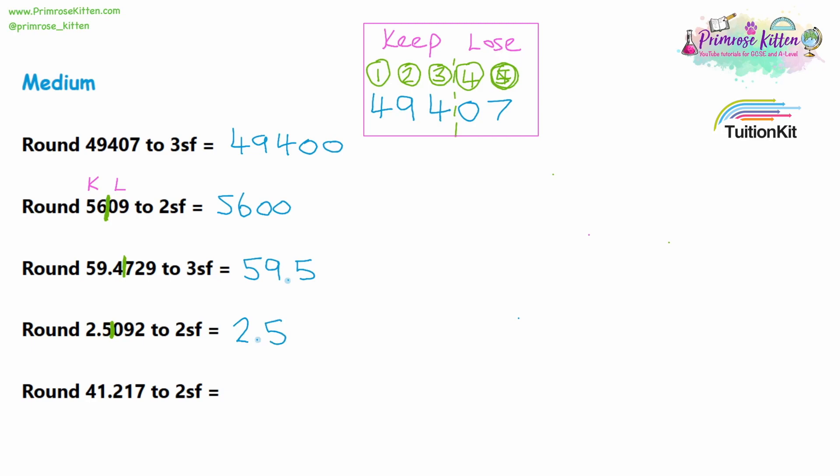Looking at question five, we're rounding to two significant figures. We rule off after the second digit, keeping the four and the one. The first number we're losing is a two, so we are not rounding up. The answer is 41.